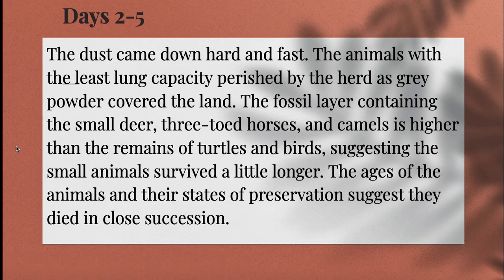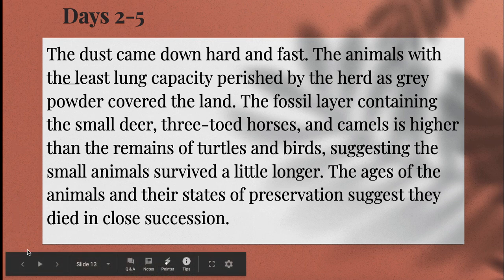Days two through five. The dust came down hard and fast. The animals with the least lung capacity perished by the herd as gray powder covered the land. The fossil layer containing the small deer, three-toed horses, and camels is higher than the remains of turtles and birds, suggesting the small animals survived a little longer. The ages of the animals and their states of preservation suggest they died in close succession.